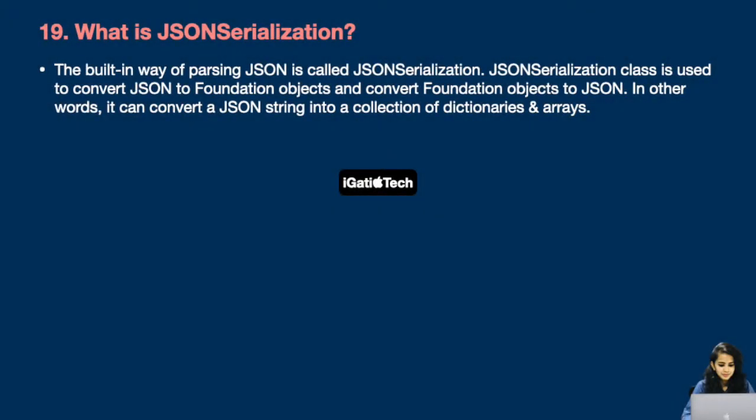Next: What is JSON serialization? It is the built-in way of parsing JSON and is called JSON serialization. The JSONSerialization class is used to convert JSON to Foundation objects and convert Foundation objects to JSON. In other words, it can convert a JSON string into a collection of dictionaries and arrays.